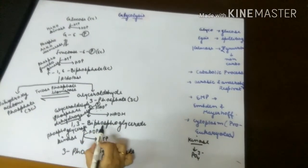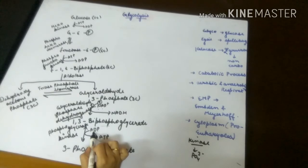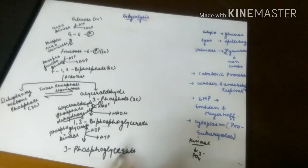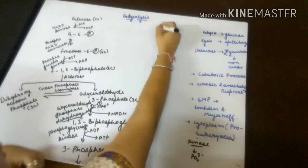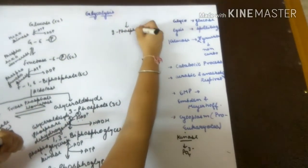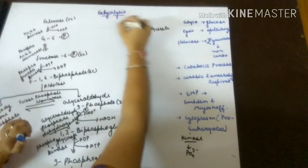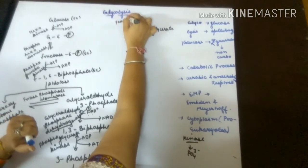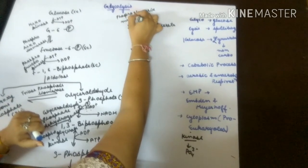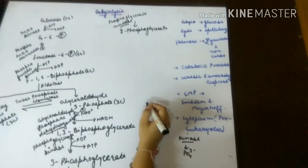One phosphate molecule from 1,3-bisphosphoglycerate is taken by an ADP molecule, which gets converted into ATP, producing 3-phosphoglycerate. This 3-phosphoglycerate is further converted into 2-phosphoglycerate by the enzyme phosphoglycerate mutase.